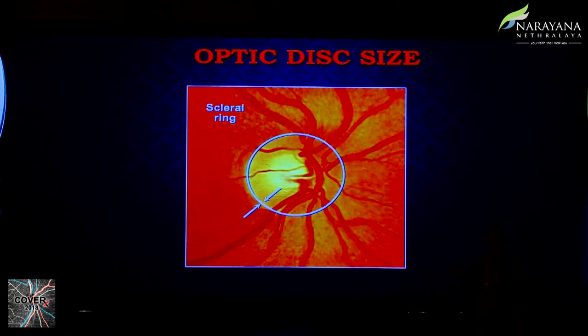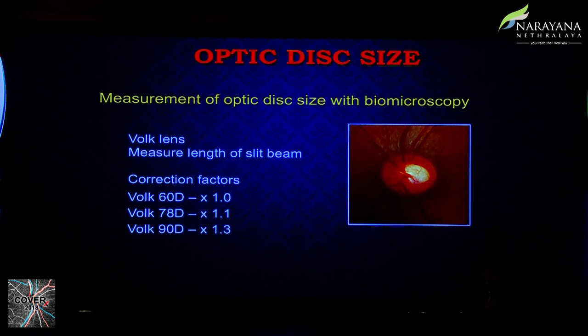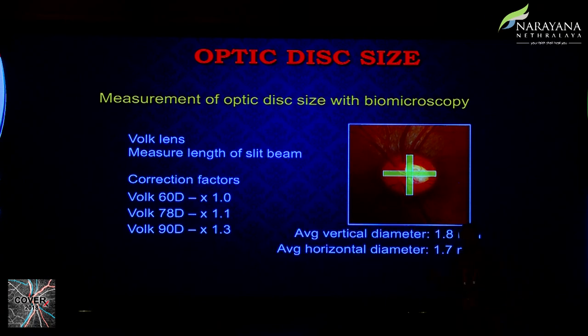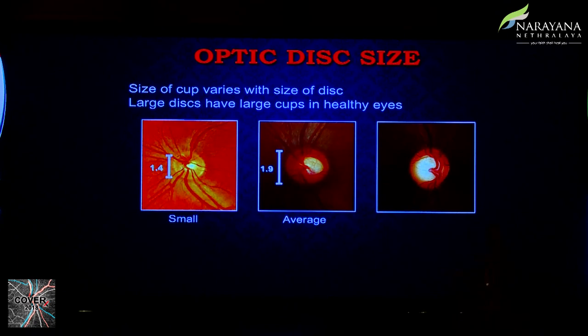To find the scleral ring, you need to define the disc borders and measure both vertical and horizontal disc diameters. Measurement of optic disc size is of immense importance; we generally measure it at the slit lamp with a high-plus power lens using the manufacturer's conversion constant. The average vertical diameter is about 1.8 mm and horizontal 1.7 mm. Disc size matters because we tend to over-diagnose glaucoma in larger discs due to their larger cups — yet all three disc sizes can be glaucomatous.